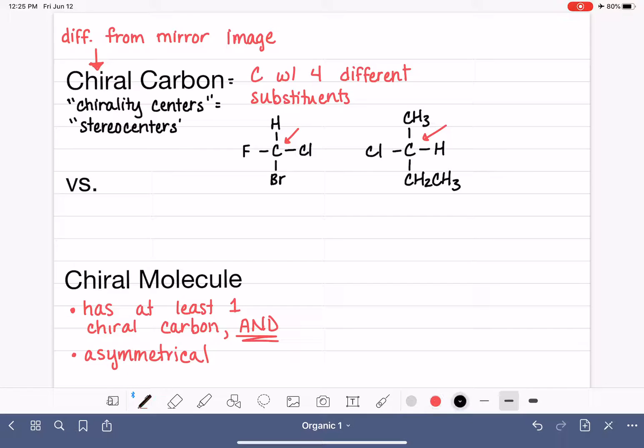By asymmetrical, we mean that there is nowhere in the molecule where we could split it in half and have a plane of symmetry. If we imagine this molecule right here, if we split it in half like this, the left half would be different from the right half because of the fluorine versus the chlorine. Or if we split it in half like this, the top would be different from the bottom because of the hydrogen versus the bromine. The two halves will always be different.